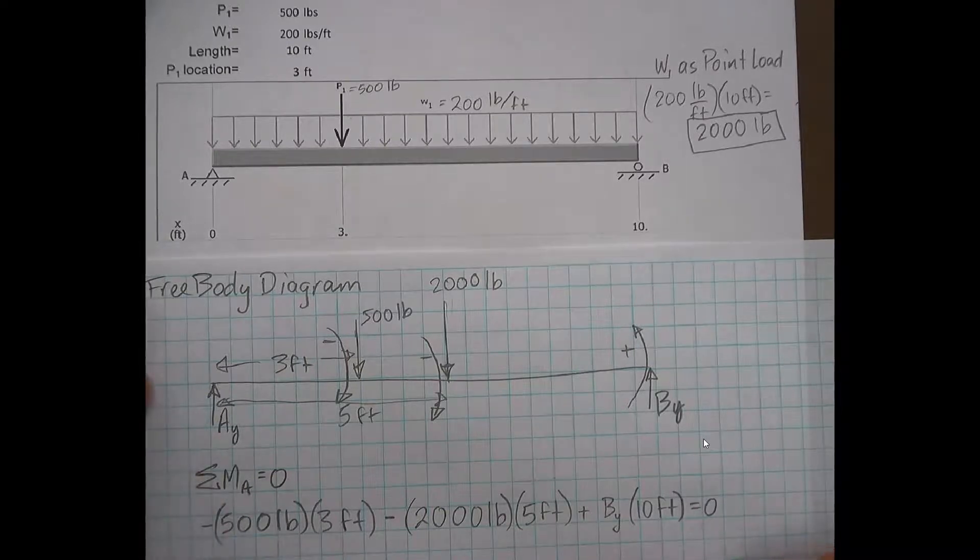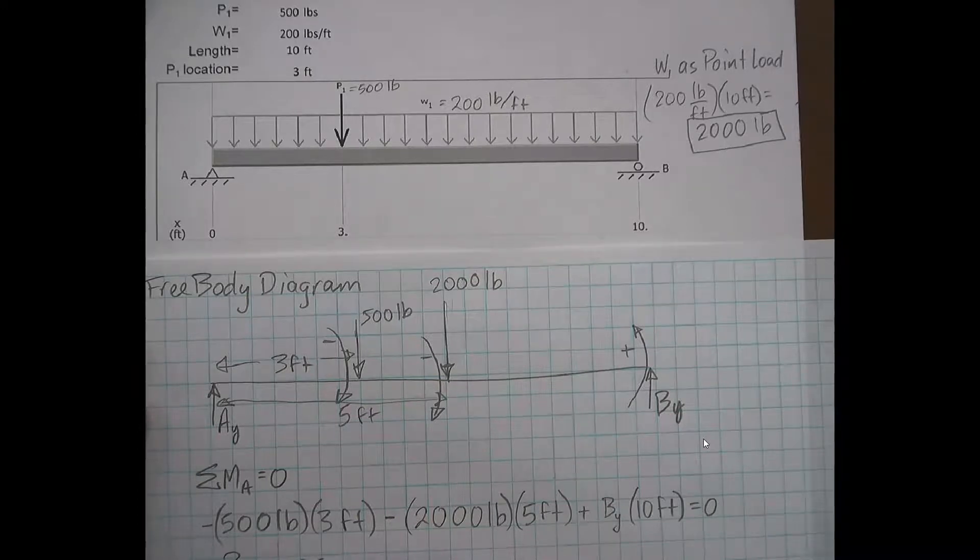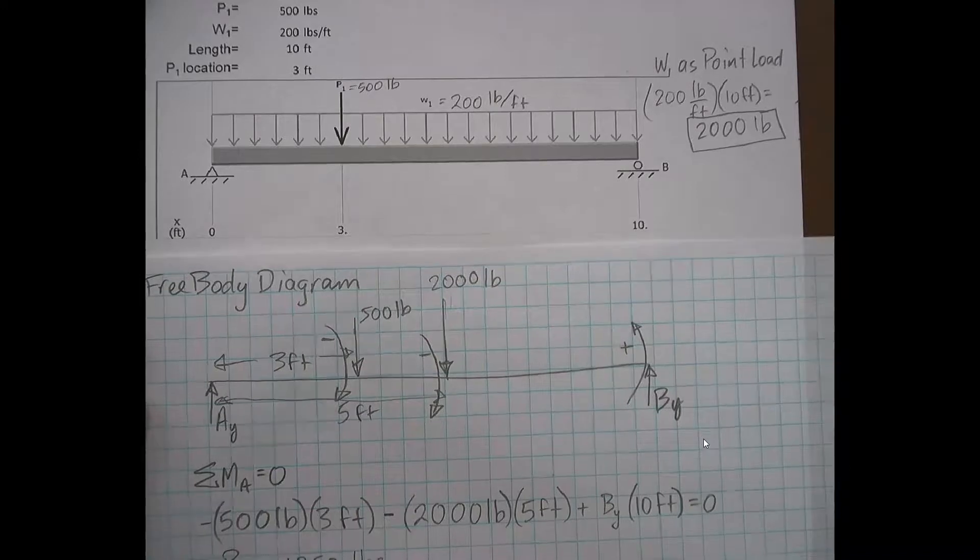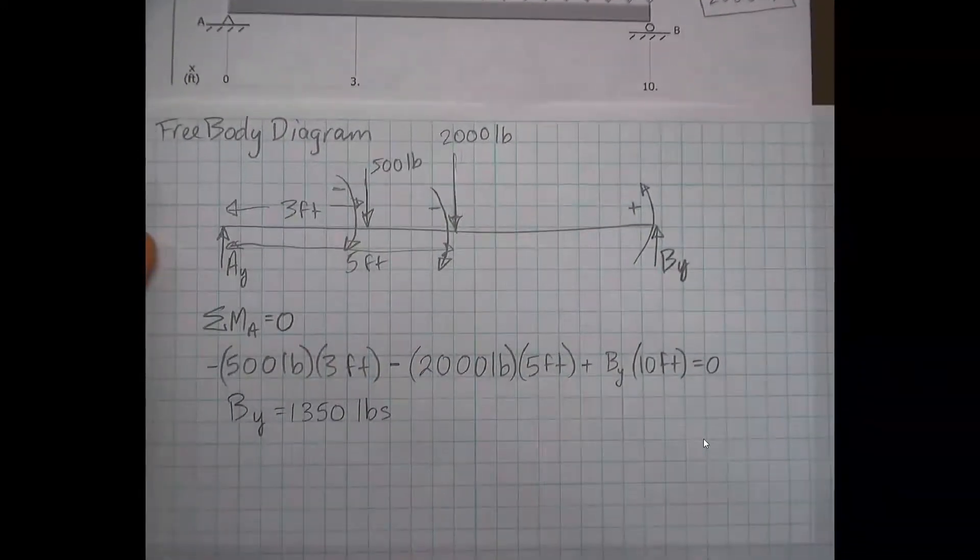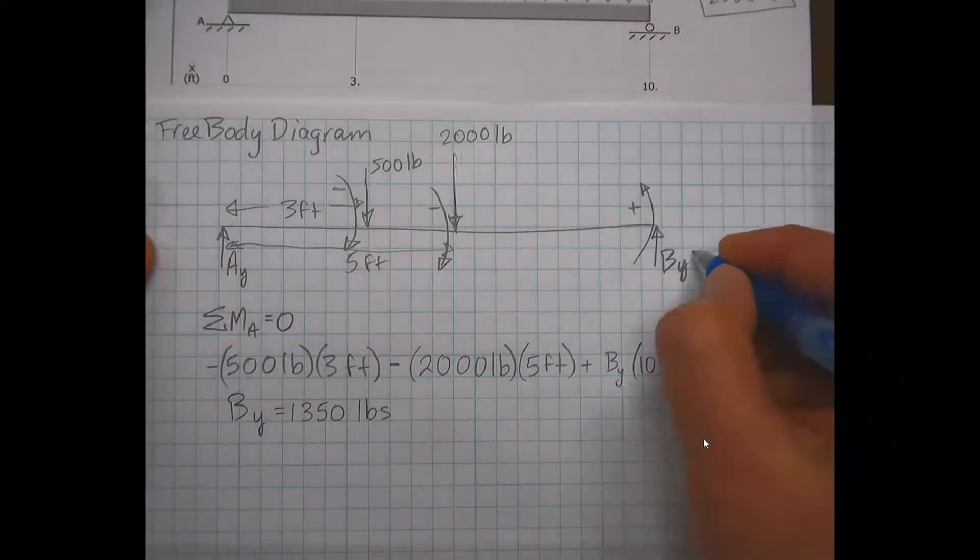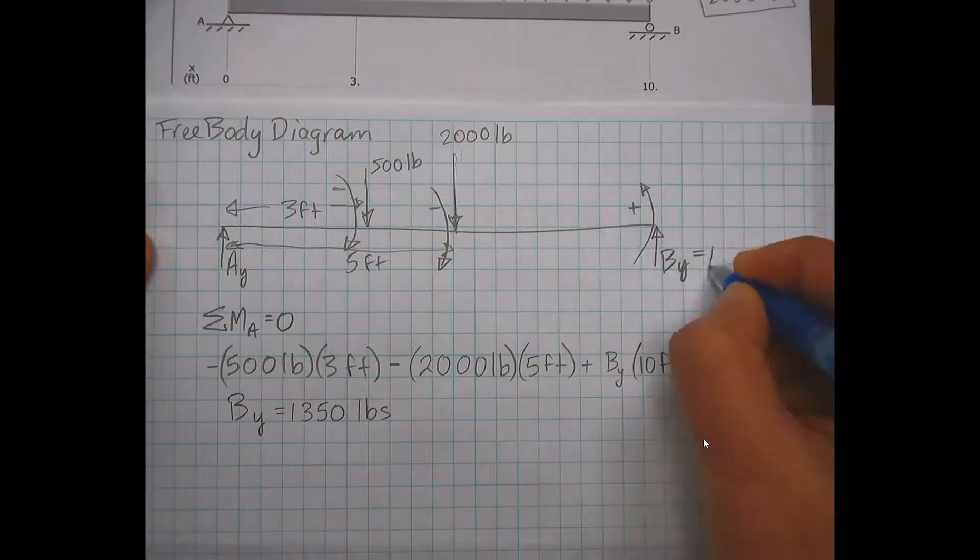At this point, we have one unknown, one equation, which is a beautiful thing to have. And after we do the math, we will find that BY is equal to 1350 pounds. Then our next static equilibrium equation that we'll use to solve for AY.